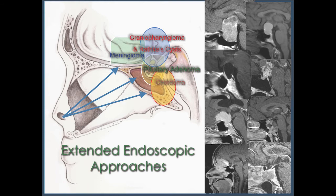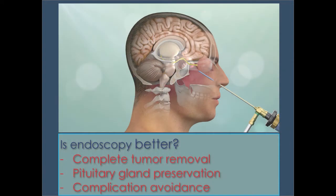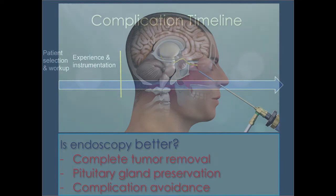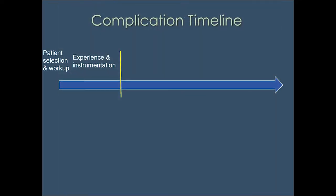This endoscopic approach has become the standard for many midline skull base tumors beyond pituitary adenomas — craniopharyngiomas, meningiomas, chordomas. But the question is: are we doing a better job? Are we getting more tumor out, preserving gland function more, having fewer complications just because we're using the endoscope? The answer is a little complicated.